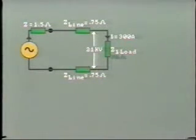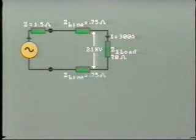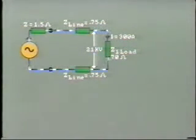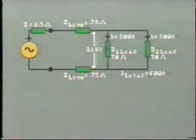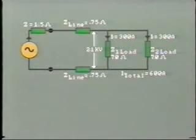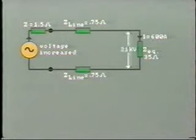Observe that the load impedance is far greater than the generator and line impedance. The return line also has an impedance of 0.75 ohms and the current, 300 amps, circulates continuously in this closed single phase circuit. Now let's see what happens when we add further load — say also 70 ohms, and of course it will be in parallel. Our total load now is 600 amps. Note that when we added load we effectively reduced the load impedance; in this case the equivalent impedance of these two loads is equal to 35 ohms.